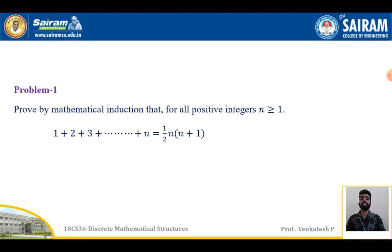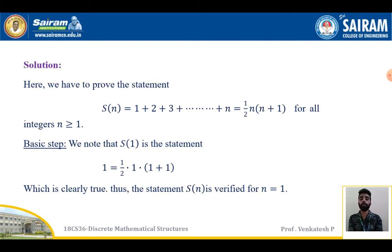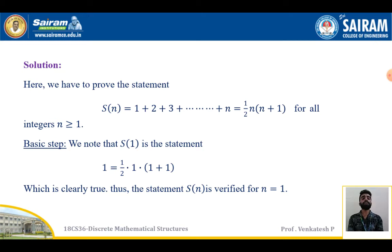Next is the induction step. In the induction step I'm going to assume S(k) is true, then prove the statement S(k+1). S(k+1) must satisfy the equation, and then we can conclude S(n) is true for all positive integers. First we prove the open statement S(n): 1 + 2 + 3 + ... + n = (1/2) · n · (n+1), for integers n ≥ 1.